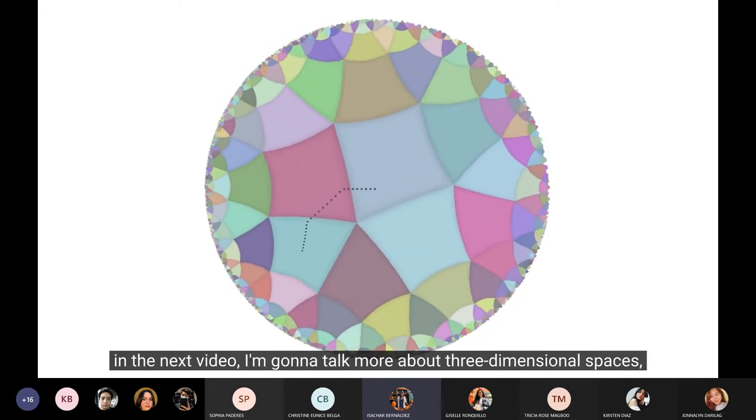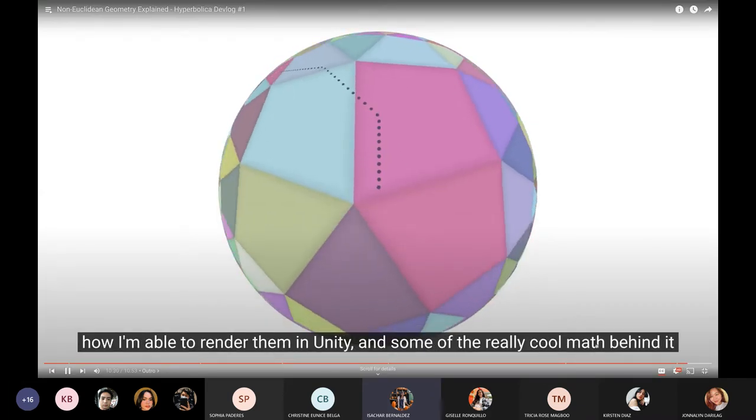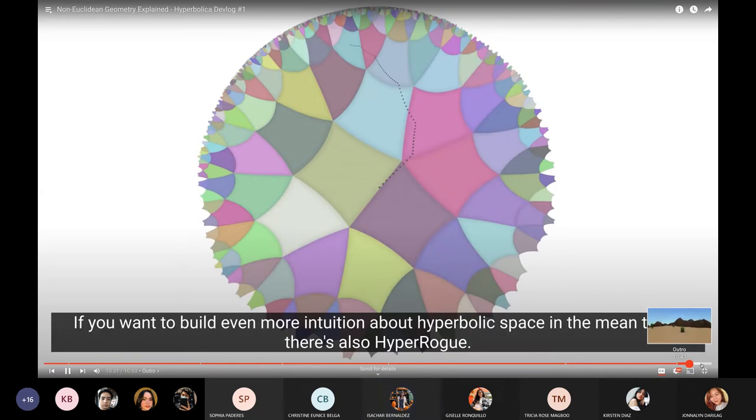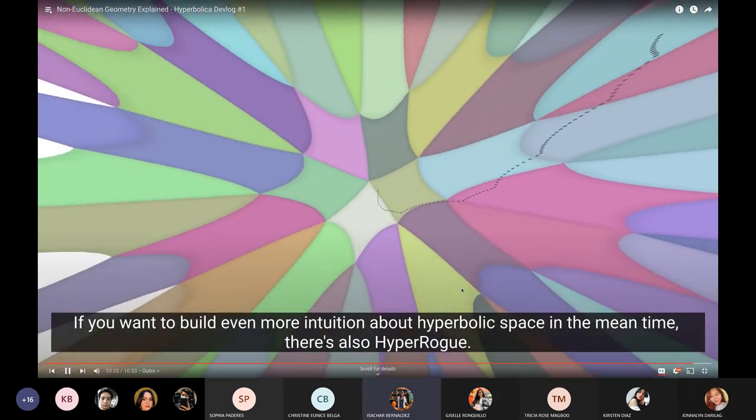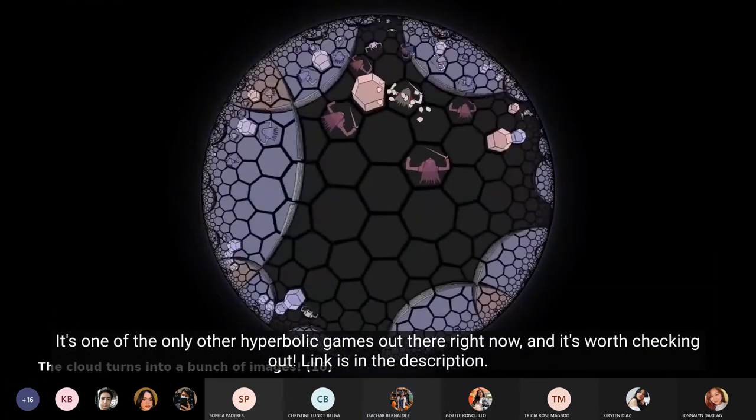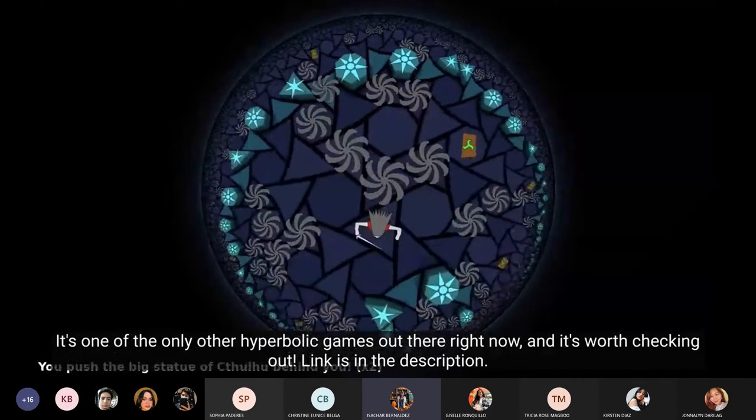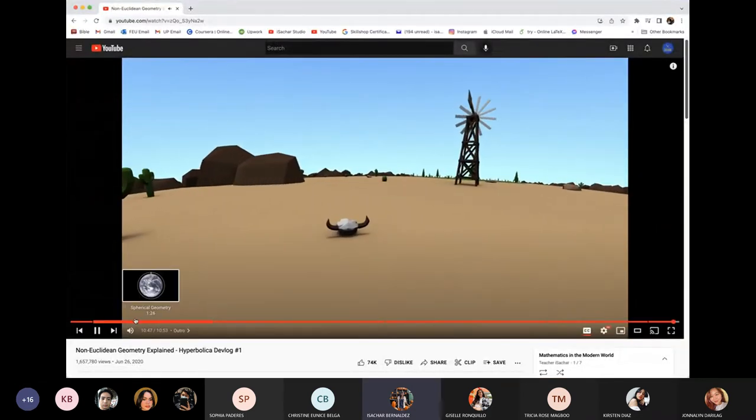So I hope that's given all of you a little better understanding of curved spaces. In the next video, I'm going to talk more about three-dimensional spaces, how I'm able to render them in unity, and some of the really cool math behind it. If you want to build even more intuition about hyperbolic space in the meantime, there's also HyperRogue. It's one of the only other hyperbolic games out there right now, and it's worth checking out. Link is in the description. So thanks for coming on this journey, and stay hyperbolic.